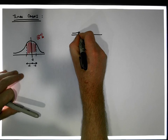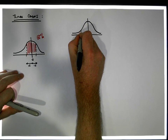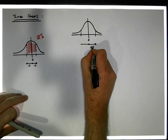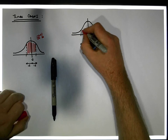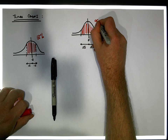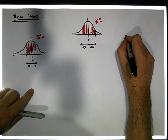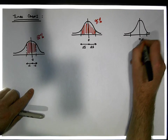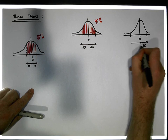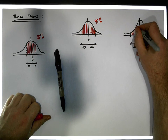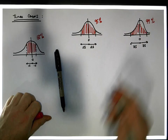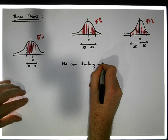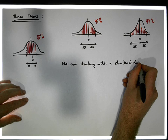Case two: within two standard deviations of the mean — two sigma on either side — we'd expect to find 95% of the area under the curve. Case three: within three standard deviations of the mean — three s on either side — we'd expect to find 99.7% of observations. So we are dealing with a standard normal curve throughout all three cases.